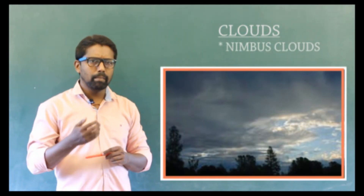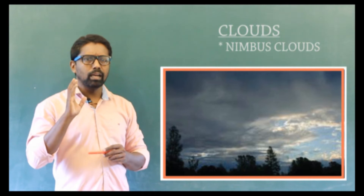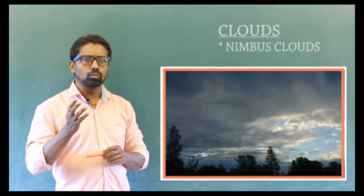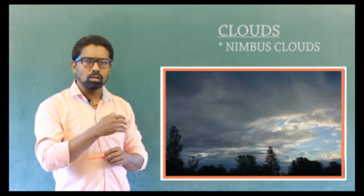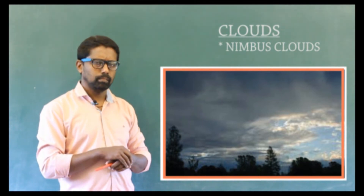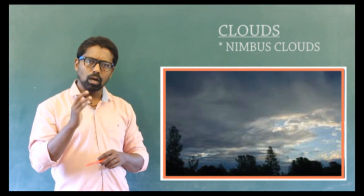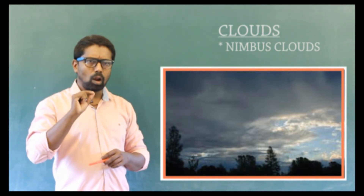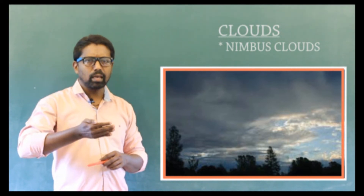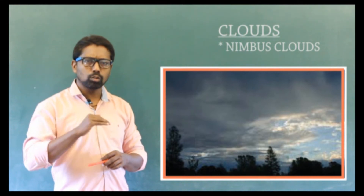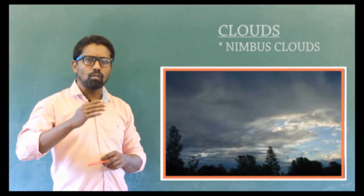Nimbus clouds: these are dark rain clouds found in the lower atmosphere. These clouds appear dark as they do not allow sunlight to pass through, due to the thick concentration of water droplets.